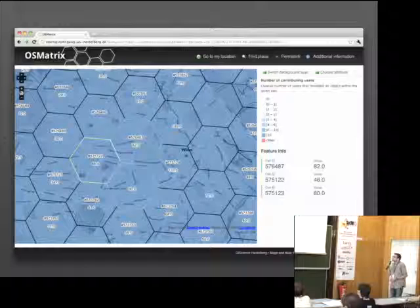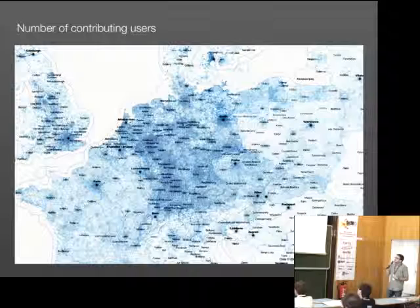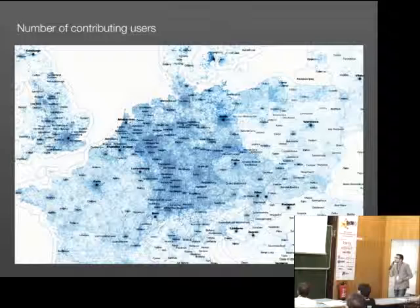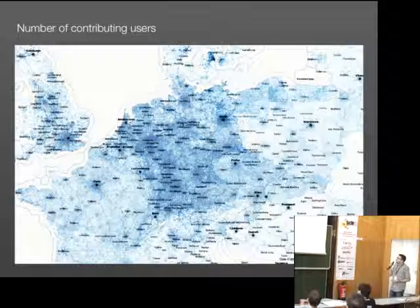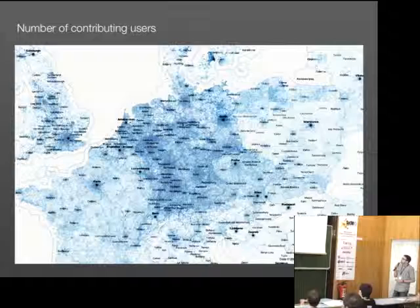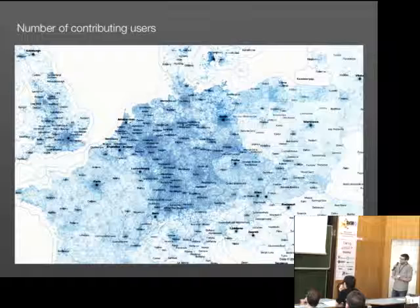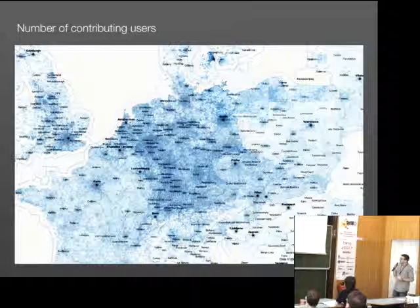We have some first results to present. First, an overview of middle Europe, then we'll dive into some single countries. This is the number of contributing users, and we can already see that there's different user activity in different countries of Europe. In Germany, for instance, we see in the urban areas like Berlin or in the west that there are a lot of users contributing, compared to France or Italy. We have very high numbers, which may indicate a very active community.